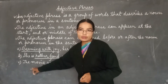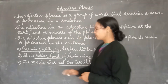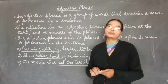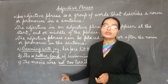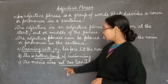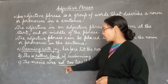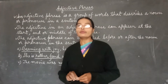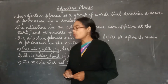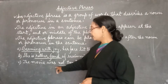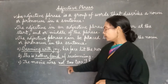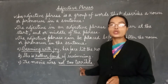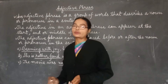Come to sentence C: 'The movie was not too terrible.' Here, the words 'not too terrible' is our adjective phrase, and we can see that the adjective phrase is placed at the end of the sentence.